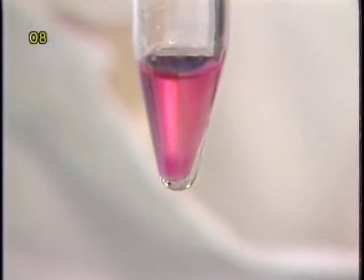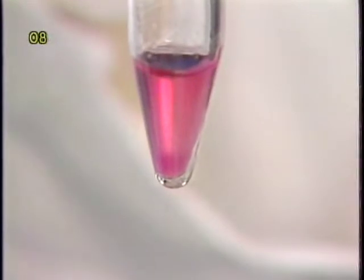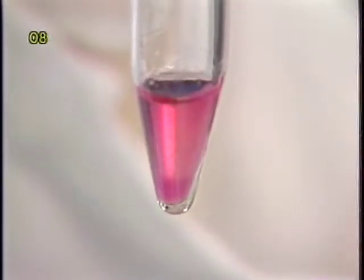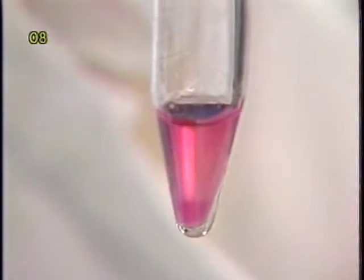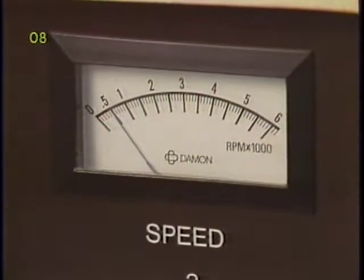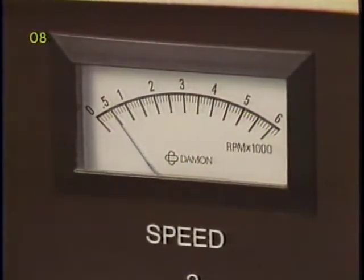However, the boundary between the supernatant and the microcarriers is usually not sharp, making subsequent removal of supernatant a bit difficult. By centrifuging at about 500 RPM for 30 seconds to one minute, a packed bed of microcarrier beads is formed at the bottom of the tube.